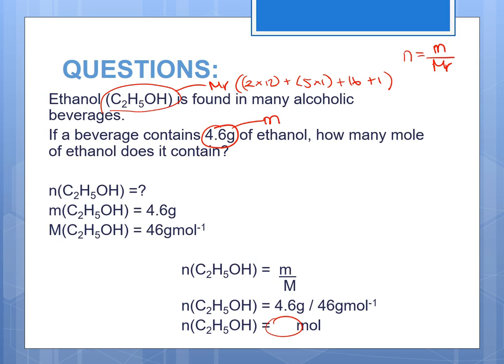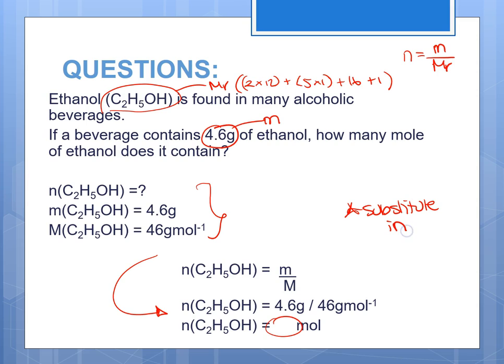Notice I'm showing my working. At minimum, you should either highlight where each piece of information comes from or list the information before substituting in. Always substitute in, because there is often a mark for the substitution in your exam. If you make a calculator error without showing your substitution, you'll get no marks at all. But if you've shown your substitution and then made an error in the calculation, you'll probably still get a mark. So even if it seems obvious, make sure you show it.